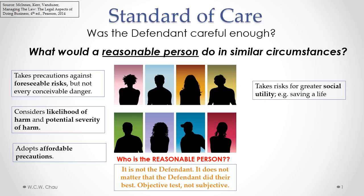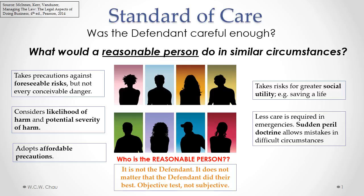A reasonable person takes risks where social utility is involved. A reasonable person would take a greater risk if it involves an emergency kind of situation where they are trying to save someone's life, for example. Related to that is also the sudden peril doctrine, which allows a reasonable person to make mistakes where there are difficult circumstances, especially in an emergency situation. So we cut a person more slack in an emergency situation.